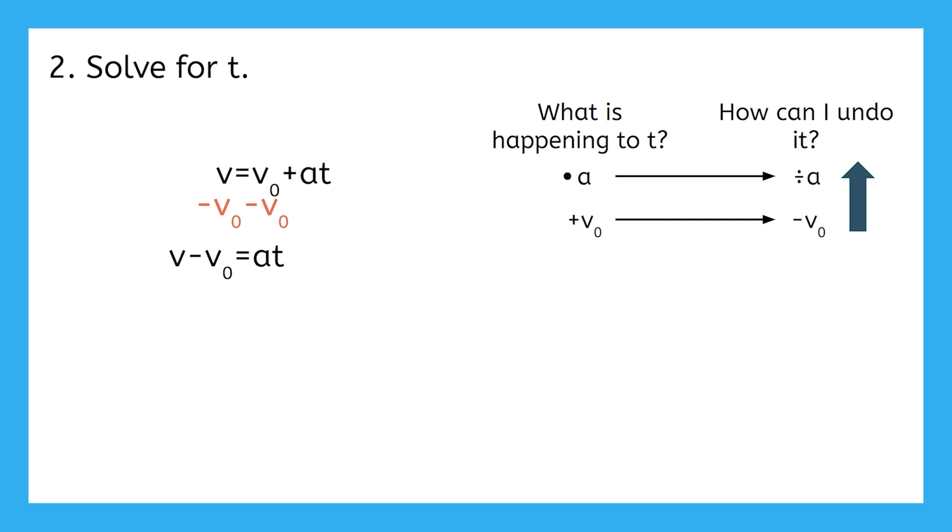Since A is being multiplied by T, we can divide both sides by A to undo it. This leaves the T by itself on the right. Can I simplify anything on the left?